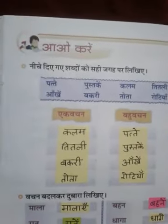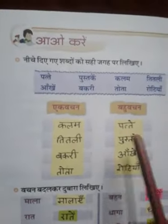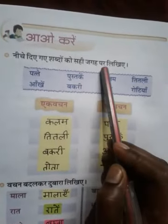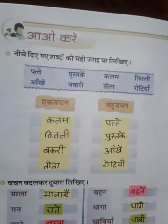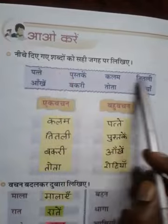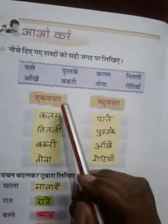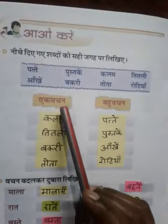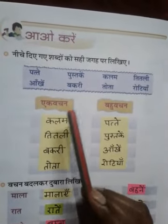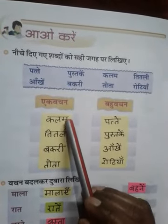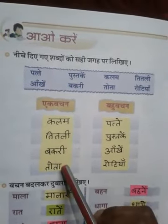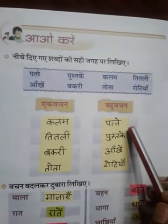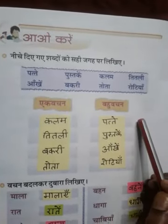Aao kare. Neeche diye gaye shabdon ko sahi jagah par likhiye. Baccho, yahan jo shabde diye gaye hain, inhe sahi jagah par likhna hai. Jaise yahan ek vachan mein, jin ki sankhya ek hai, unhe likhna hai. Aur bahu vachan arthat, yahan jin ki sankhya ek se adhik hai.